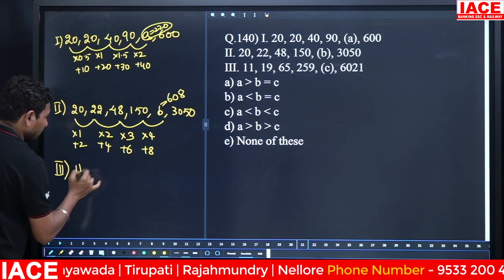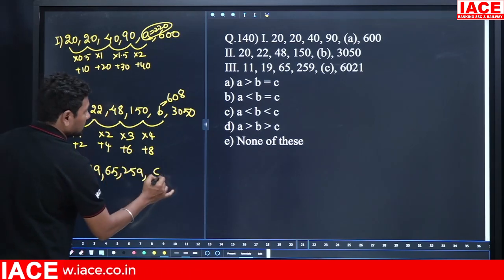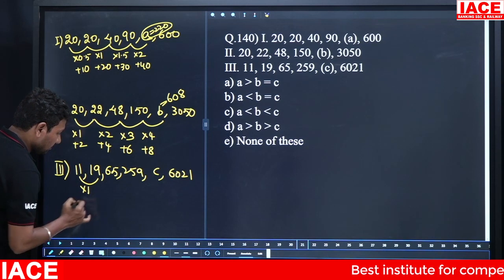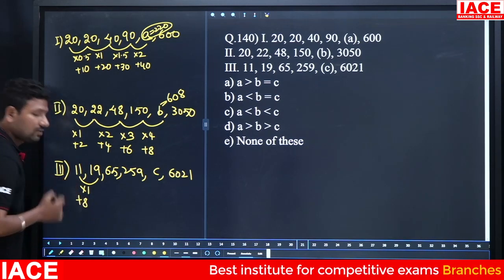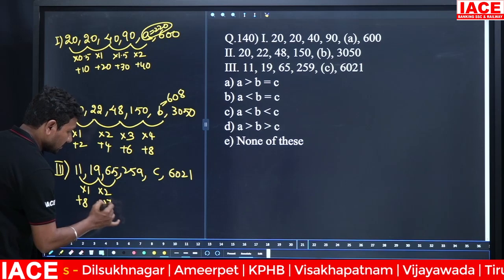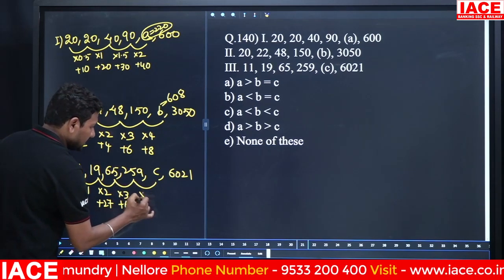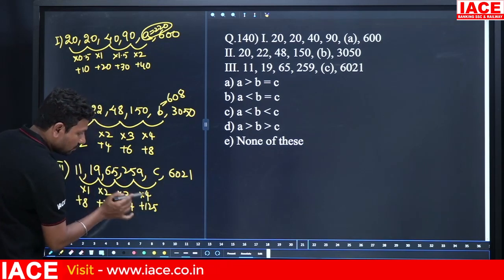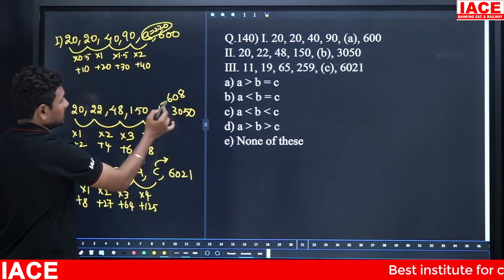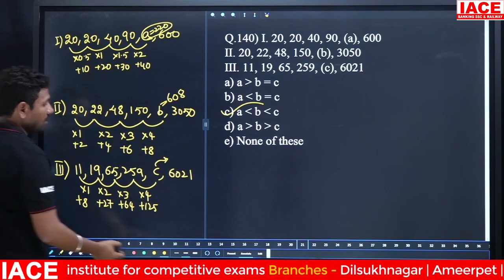Series 6: 11, 19, 65, 259, C, 6021 — pattern ×1+8, ×2+27 (3³), ×3+64 (4³), ×4+125 (5³). So 259 × 4 + 125 = 1036+125 = 1161, C ≈ 1161. Verify: 1161 × 5 + 216 = 5805+216 = 6021. So C > 1000 meaning A < B < C. Option C.